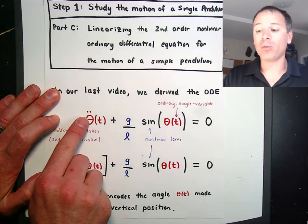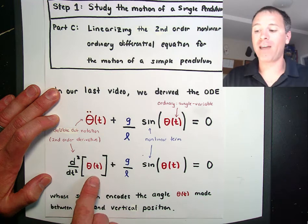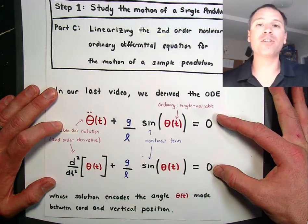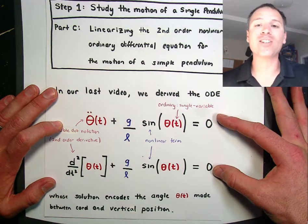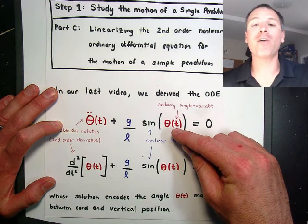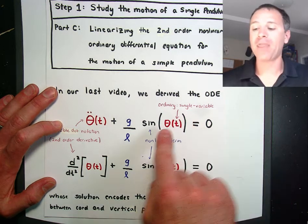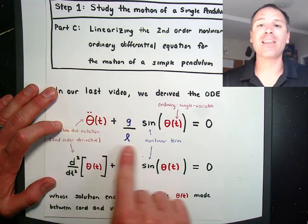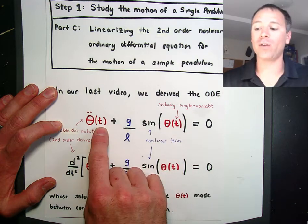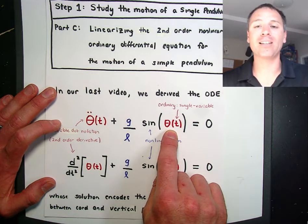With that double-dot notation, we knew that was the second derivative of theta. The goal of solving this ordinary differential equation is to find functions theta of t that satisfy this relationship between the second derivative and the ordinary function itself.